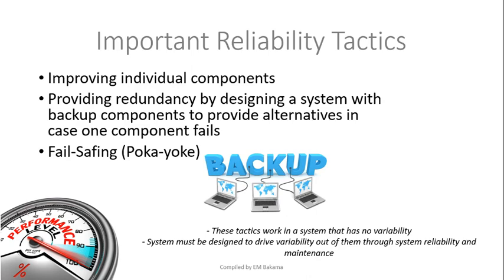There are important reliability tactics — ways to improve reliability. First, improve individual components. For example, if Takealot has five drivers who should deliver products, each driver must be trained to deliver on time and correctly. If only one out of five drivers is reliable, four customers will complain they didn't get their product on time, affecting the company's reliability. If all five are reliable, the whole company will be considered reliable.